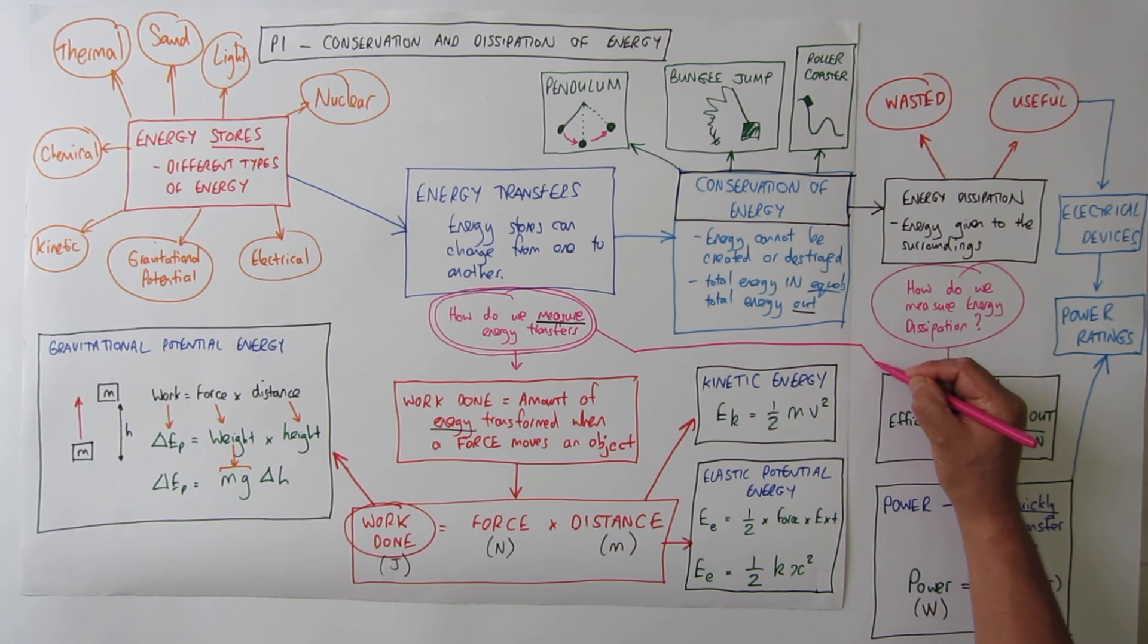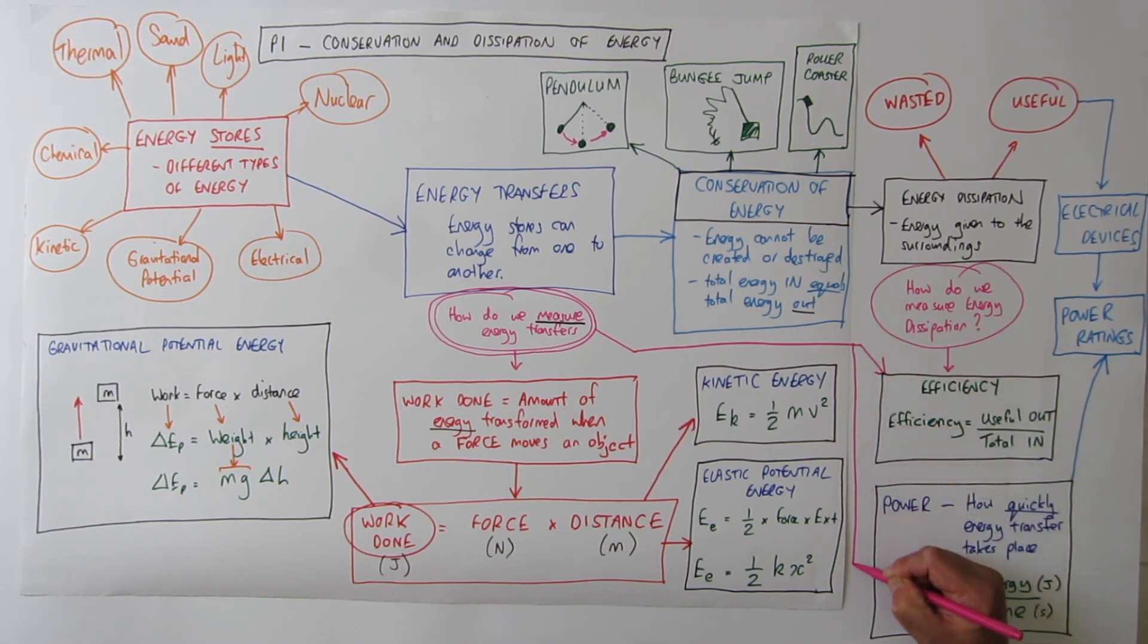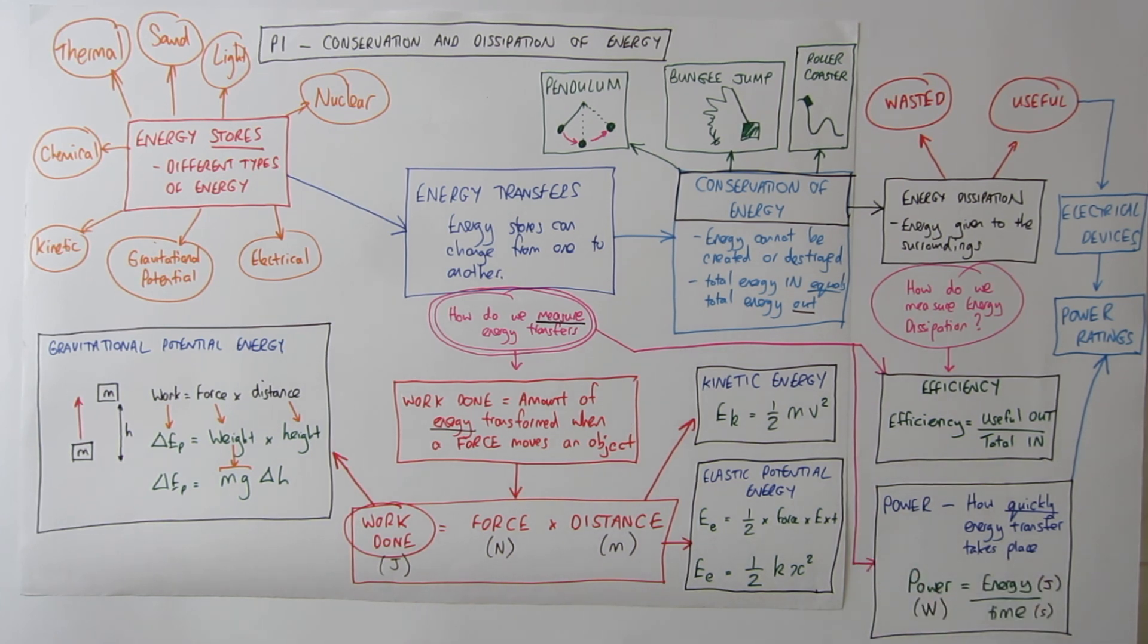This tells us the amount of useful energy that comes out. And a third way of measuring energy transfers is by power. Which is how quickly energy transfers take place.